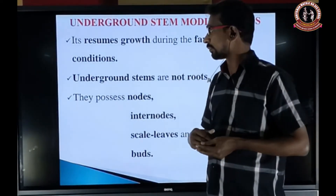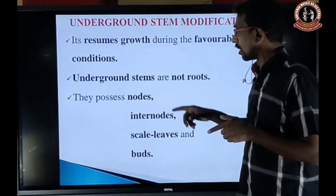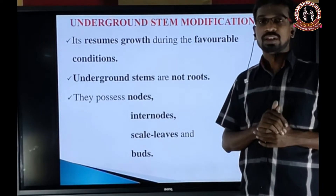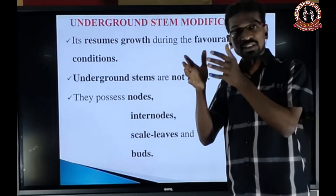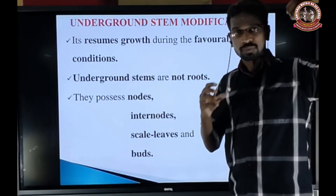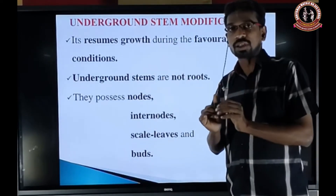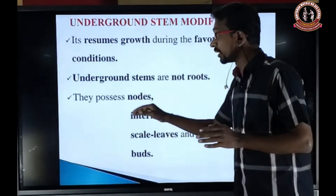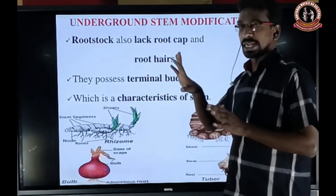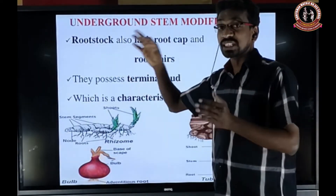The underground stem is not a root — it is a stem. Even though it is present inside the soil, the underground part has stem characters like node, internode, scale leaves, and buds. The root stalk also lacks root cap and root hairs, so that is why it is not a root — it is a root stalk present inside the soil as a propagule.